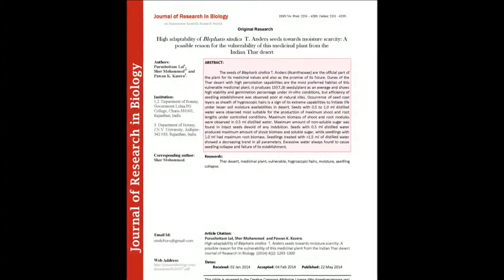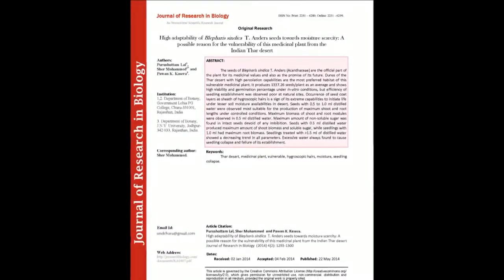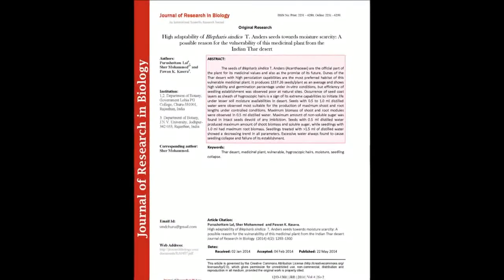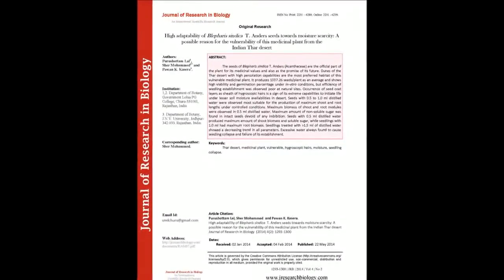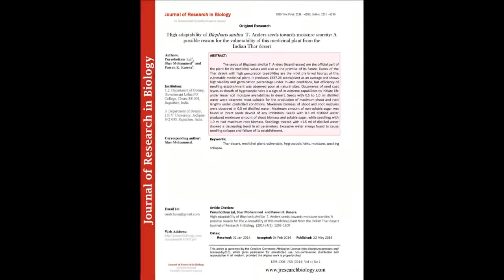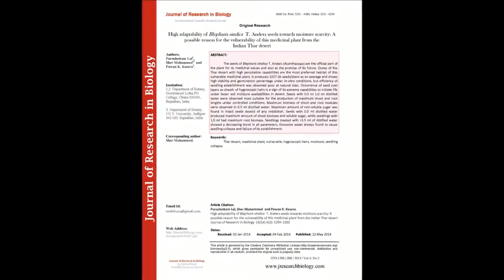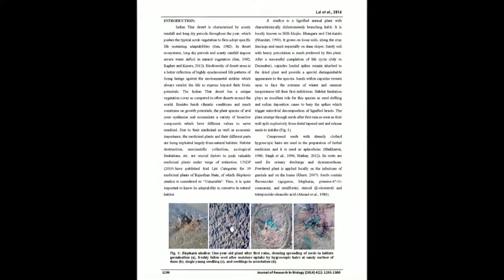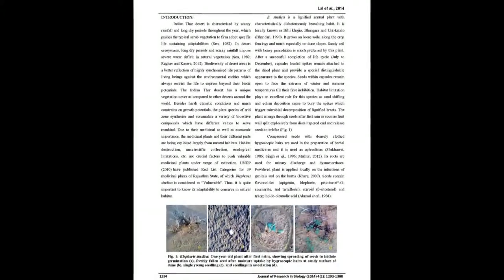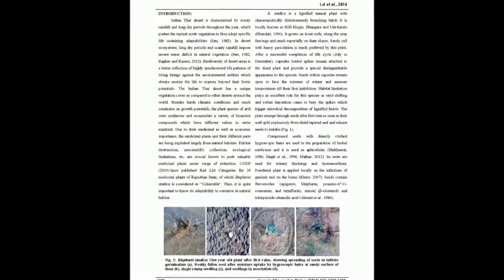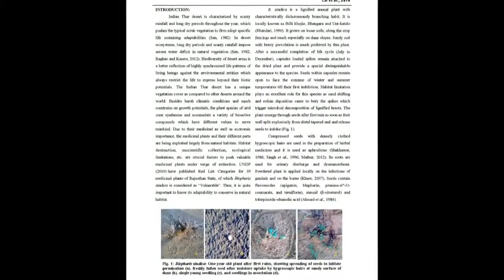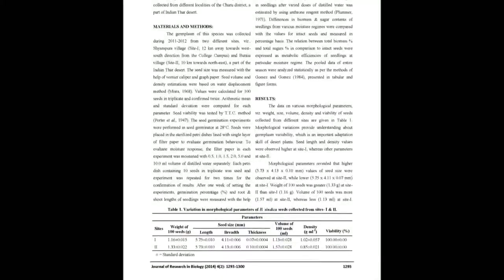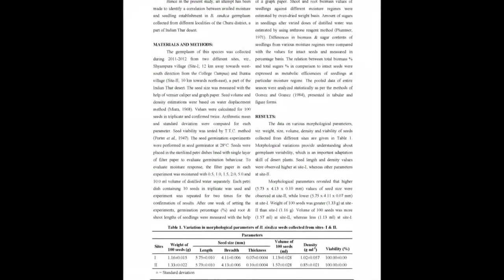The seeds of Blethery Syndicate and Urseicentaceae are the official part of the plant for its medicinal values and also as the promise of its future. Dunes of the Mar Desert with high percolation capabilities are the most preferred habitat of this vulnerable medicinal plant. It produces 1,337.26 seeds per plant on average and shows high viability and germination percentage under in vitro conditions, but efficiency of seedling establishment was observed poor at natural sites.